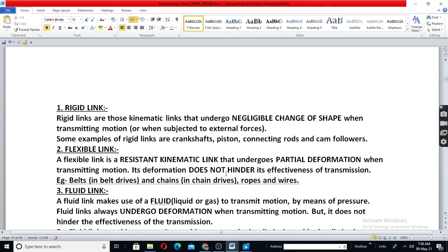Rigid link means which goes negligible change of shape. For example, metal parts, crankshaft, piston, connecting rod, cam followers, bearing, all these come here.